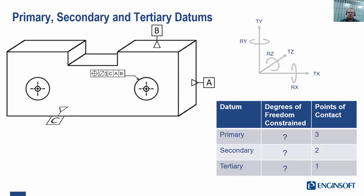Now, when we use multiple datums, they are ordered as primary, secondary and tertiary. And each of these datums controls different degrees of freedom depending on their order.